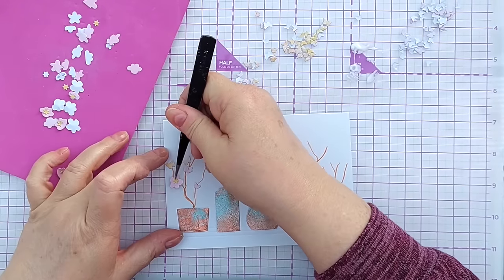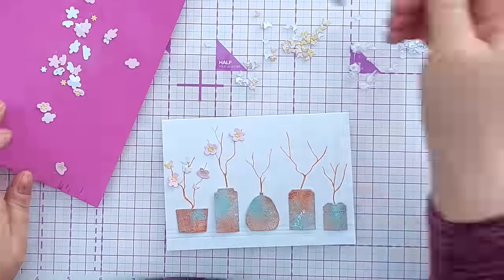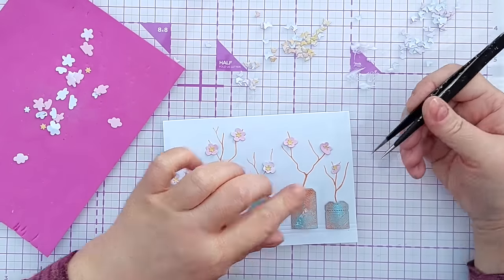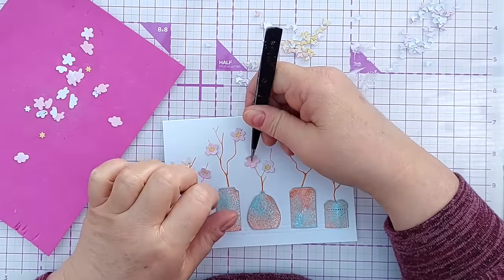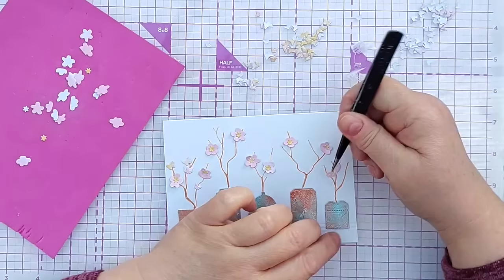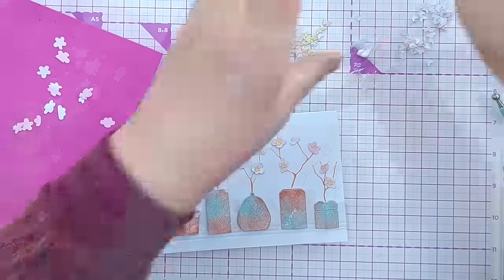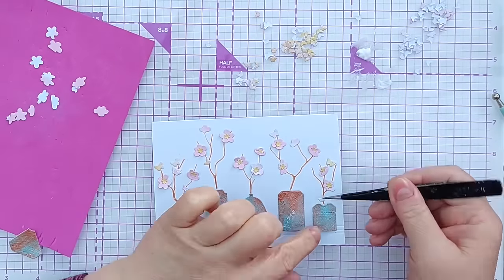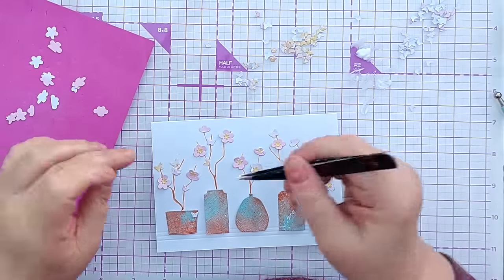And if you've made a bit of a mess with your doodled branches you can always cover up the messy bit with your flowers and you can always add extra branches if you want. If once you've stuck everything down you think oh that's not quite right I want to add a few extra flowers there's nothing to stop you doing that at all. And now we can put in our butterflies. You can even have some of the butterflies fluttering around the sky they don't have to be all sitting on branches.